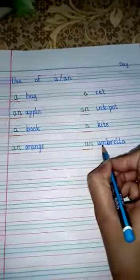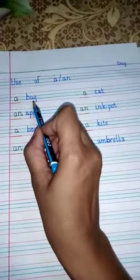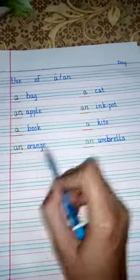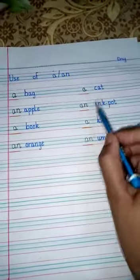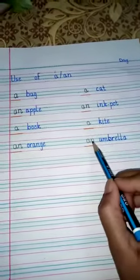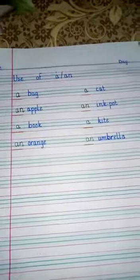Like this you will do your work. Now read: a bag, an apple, a book, an orange, a cat, an ink pot, a kite, an umbrella. Do this work in your neat copies.